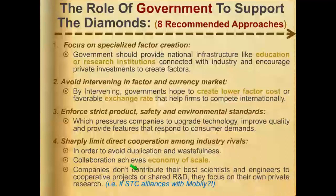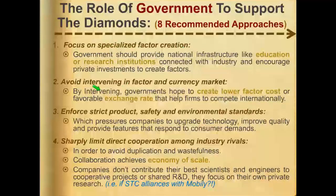There are eight recommended approaches for the government. The first is to focus on specialized factor creation. The second is to avoid intervening in factor and currency markets — by intervening, governments hope to create lower factor costs or favorable exchange rates to help firms compete internationally. The third is to enforce strict product safety and environmental standards, which is a very important point about the role of government.